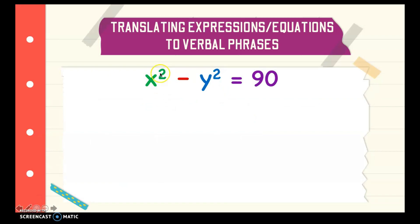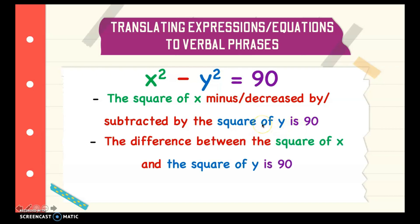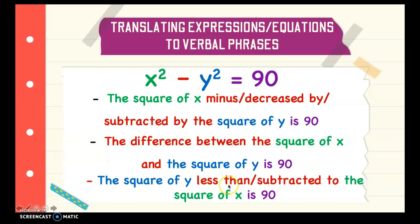Next we have x squared minus y squared is equal to 90. We can say the square of x, minus, or decreased by, or subtracted by the square of y — since the exponent is 2, we can use square instead of second power — is 90. You can also say the difference between the square of x and the square of y is 90. Or, if you want to use less than, the square of y less than the square of x is 90.